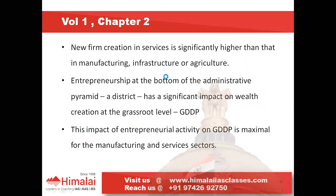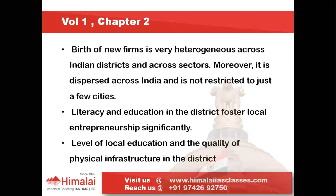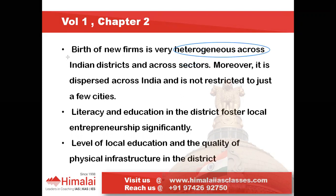Other analytical findings from this chapter: the birth of new firms is very heterogeneous across Indian districts and across sectors, meaning there is no uniformity. It is dispersed across India and not restricted to just a few cities. In all parts of India — rural and urban, north, south, east, and west — there are too many variations in the creation of new firms. For example, the chapter points out that the eastern part of India has the least number of newly created firms.